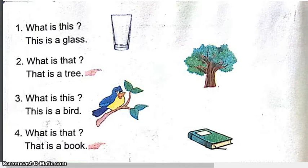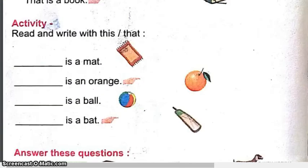For things that are near, we use 'this'. For things that are far, we use 'that'. Read and write with this and that.